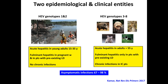There are two epidemiological and clinical entities. Genotypes 1 and 2 are strictly found in humans, mainly in young adults, and can induce fulminant hepatitis in pregnant women and in patients with pre-existing liver disease. Genotypes 3 and 4 can only induce fulminant hepatitis in patients with pre-existing liver disease, and these genotypes can induce chronic infection in immunocompromised patients. Importantly, all these genotypes give very frequent asymptomatic infections.